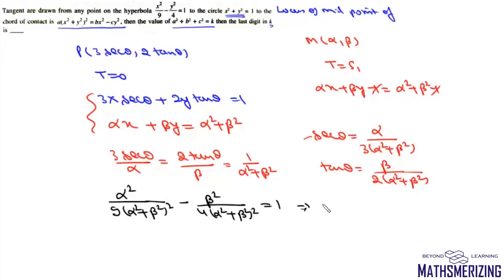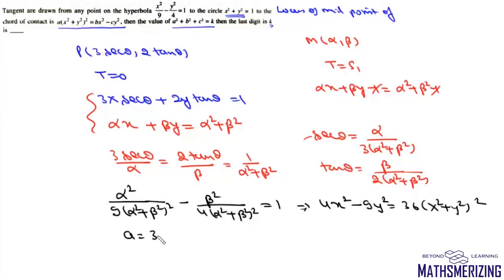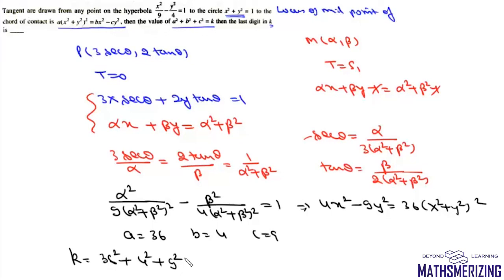This gives the locus as 4x² − 9y² = 36(x² + y²)², so a = 36, b = 4, and c = 9. The value of k = a² + b² + c² = 36² + 4² + 9².